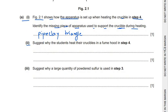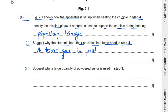Question 2 asks why the students heat their crucible in a fume hood in step 4. The reason is that whenever a toxic gas is being produced, we heat it inside a fume cupboard, also called a fume hood. A toxic gas is produced, so we heat it in a fume cupboard so that the gas is not released into the air and is not harmful to human beings or animals.